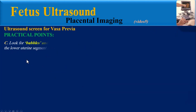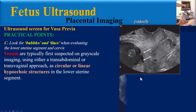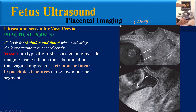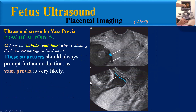Another practical point: look for bubbles and lines when evaluating the lower uterine segment and cervix. Vasa Previa are typically first suspected on grayscale imaging using either a transabdominal or transvaginal approach as circular or linear hypoechoic structures in the lower uterine segment. For teaching purposes, they may be more easily remembered as either bubbles or lines in the lower segment. These structures should always prompt further evaluation as Vasa Previa is very likely.